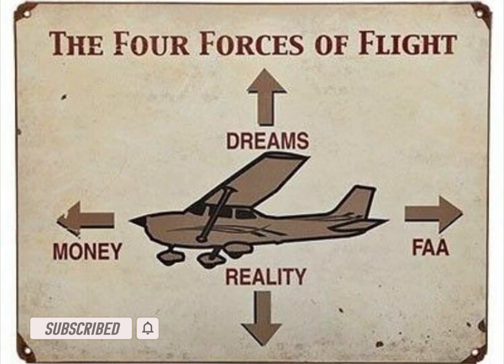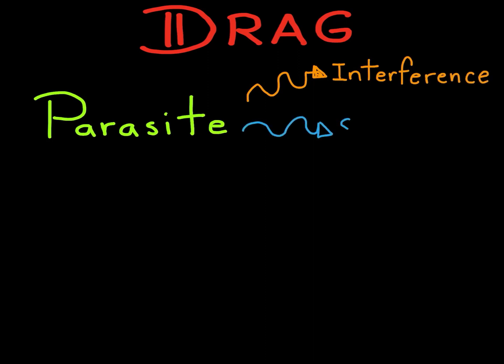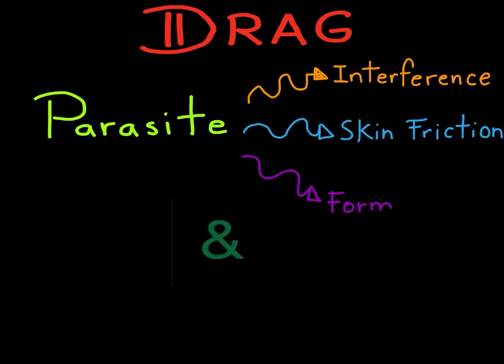Hello guys, in this video Easy Fly will explain one of the four forces of flight that slows aircraft down — and it's not the fact, it's drag. We will start with parasite drag, divided into its three kinds: interference drag, skin friction drag, and form drag. Then we will introduce a more complex one called induced drag.